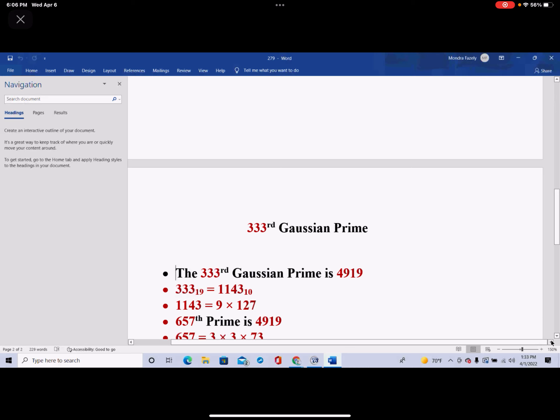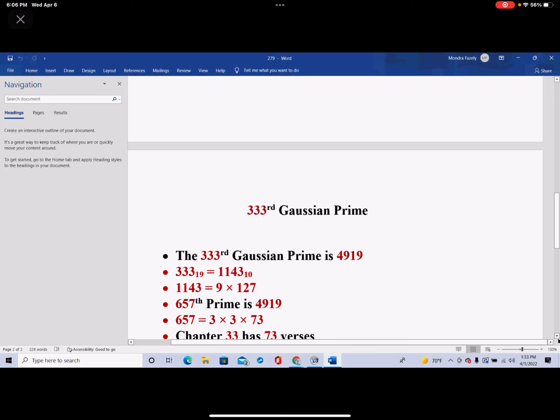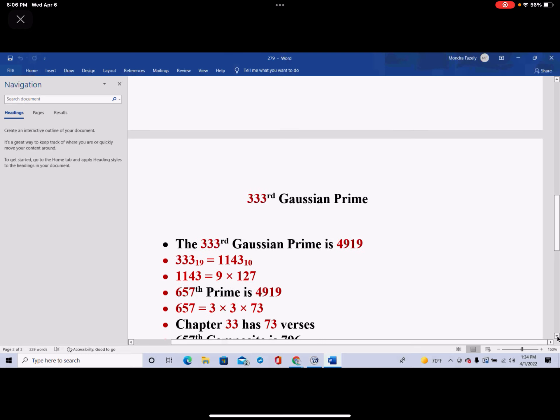And it also happens to be 657th prime number. And 657 is equal to 3 times 3 times 73, and then a quick look at chapter 33, we'll notice that it has 73 verses.